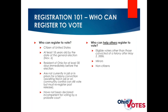Who can help others register to vote? All people who can register to vote can help others register, with the exception of people convicted of a felony after 2006. Note that minors and non-citizens can help register voters. If you have a youth program or an organization that serves refugees, this would be a great way for them to feel involved in the election without actually being able to fill out a ballot themselves.